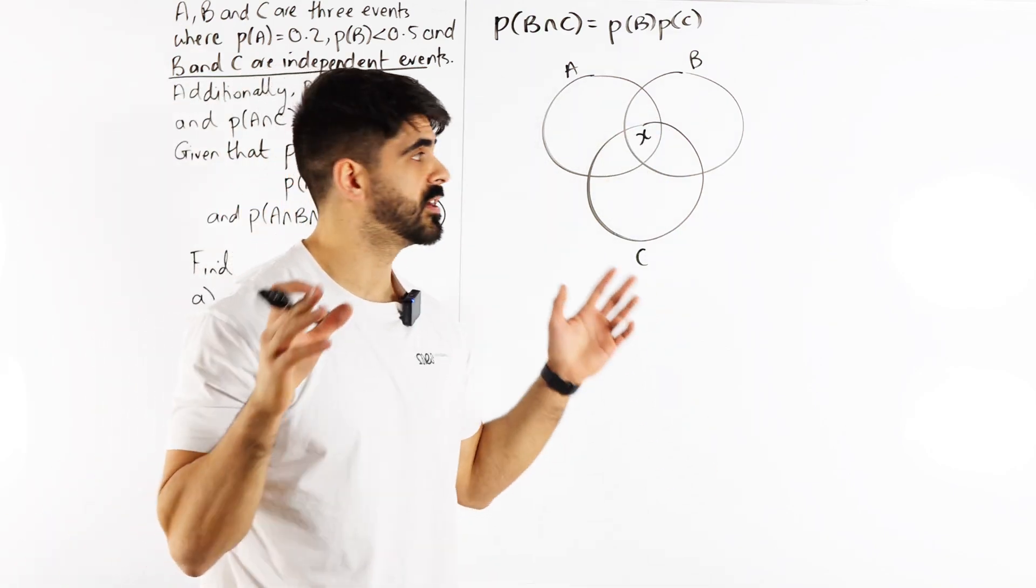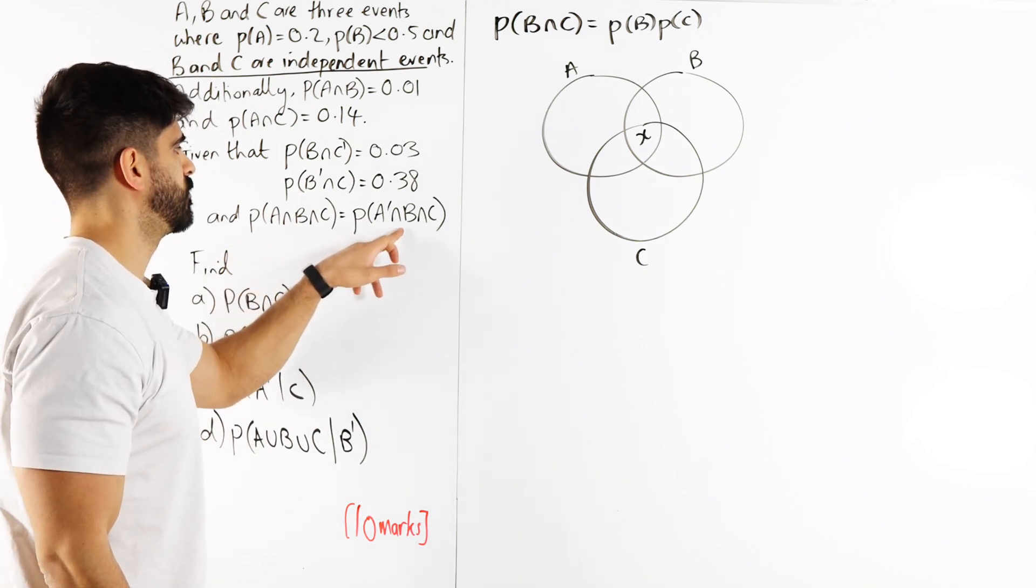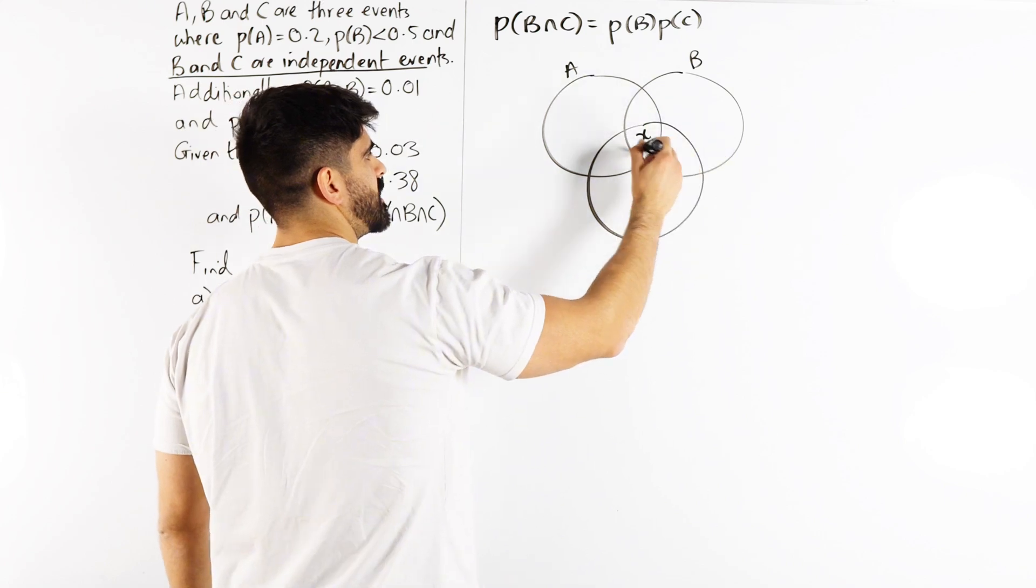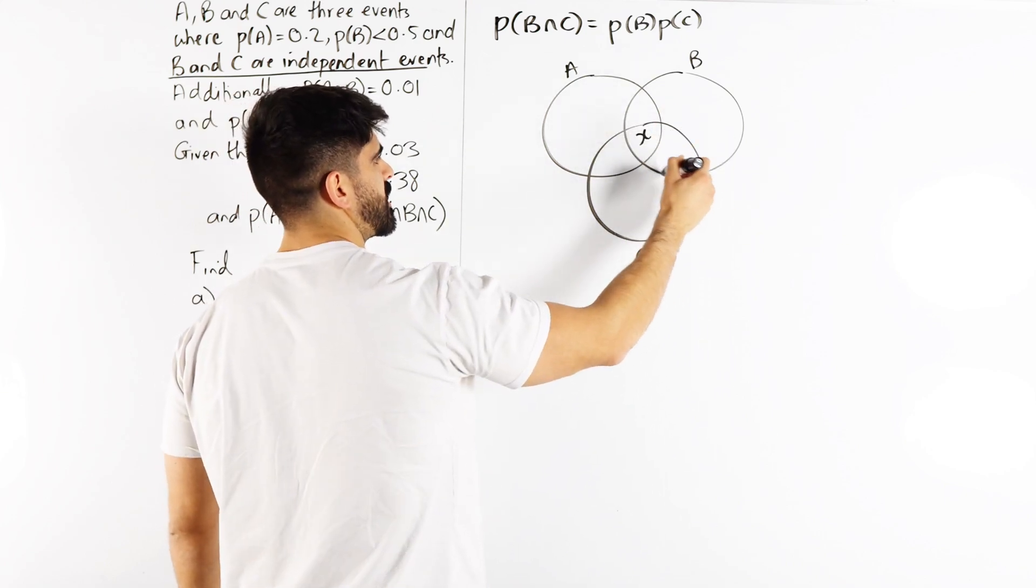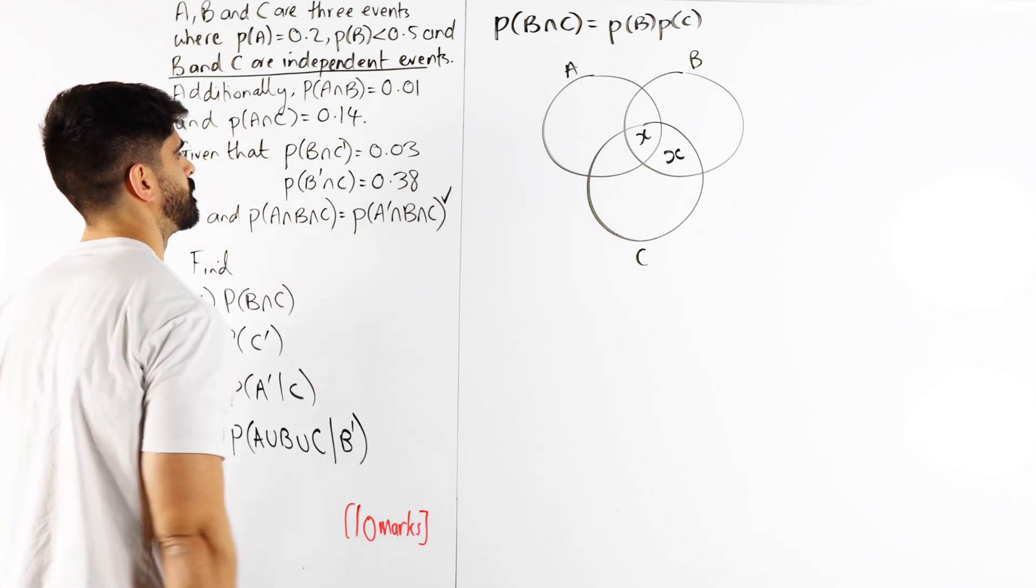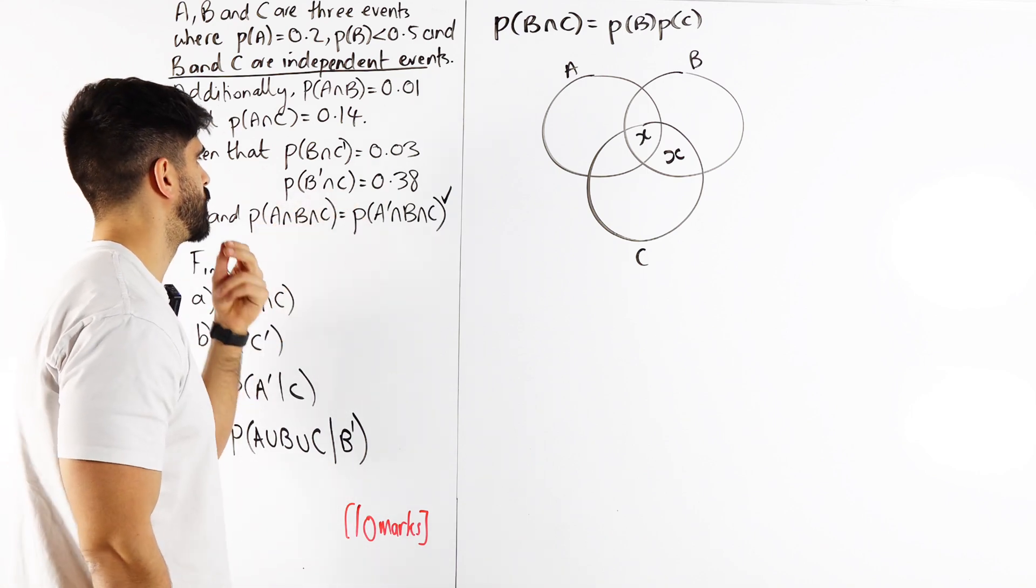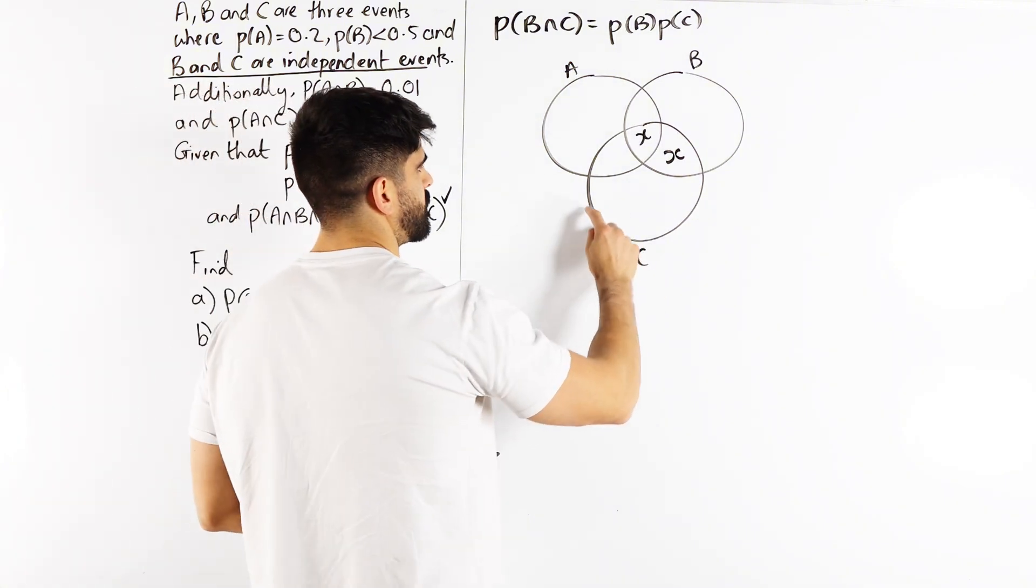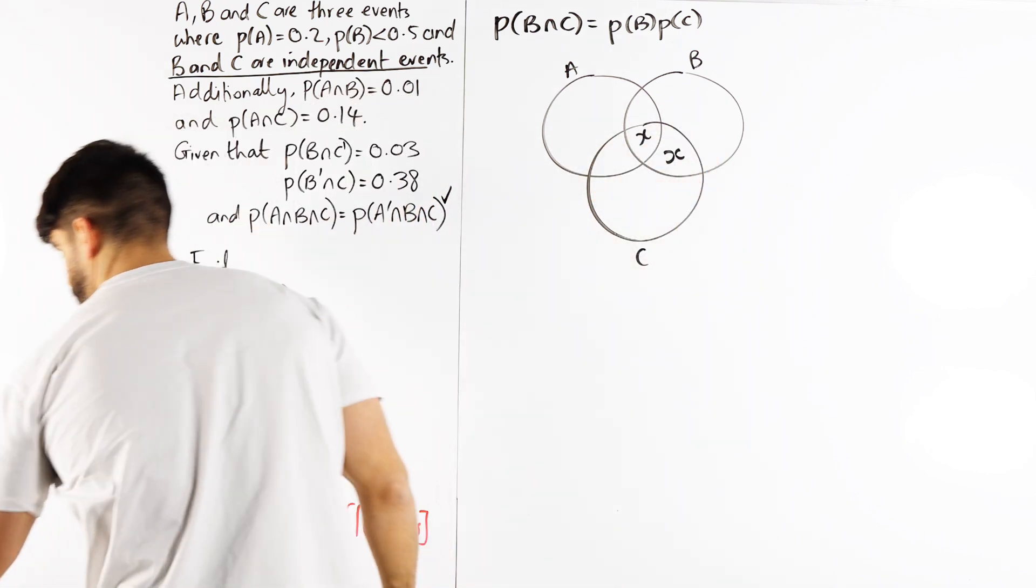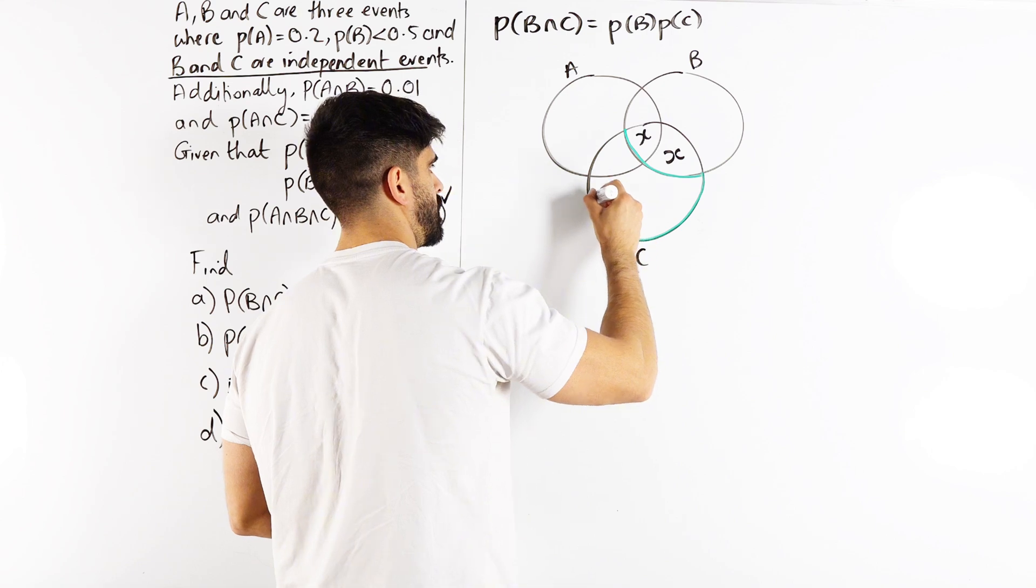That overlap is equal to P(A∩B∩C). It's saying we want B and C but nothing to do with A. Now B∩C is this, and nothing to do with A is just this bit. So they're literally saying these two things are the same. The probability of B'∩C is 0.38. What is C and not B? I want C and I want nothing to do with B. So that is this bit, which is 0.38.